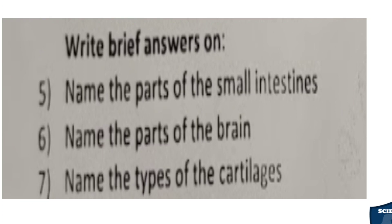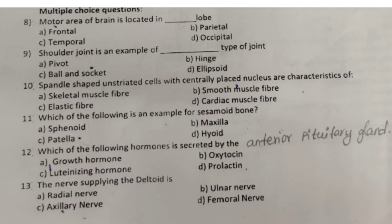Next, we will move on to MCQs — multiple choice questions. In Part A, there are 6 MCQ questions, each carrying 1 mark — 6 into 1, that is 6 marks. Question 8: The motor area of the brain is located in which lobe? Options: frontal, temporal, parietal, occipital. The answer is frontal lobe.